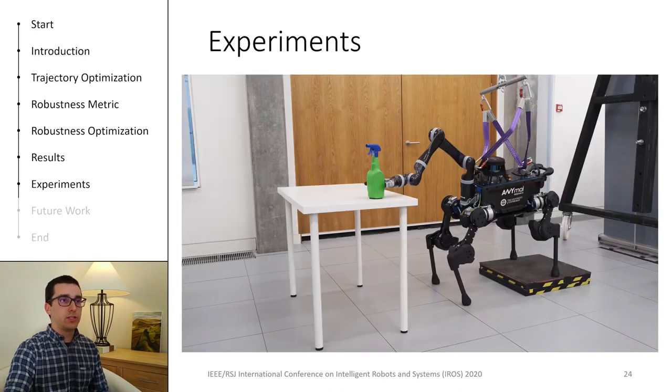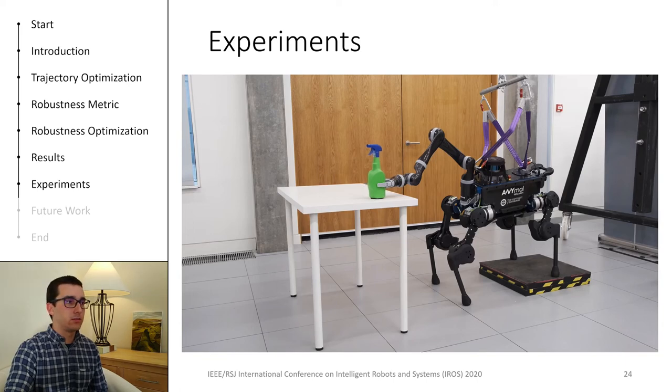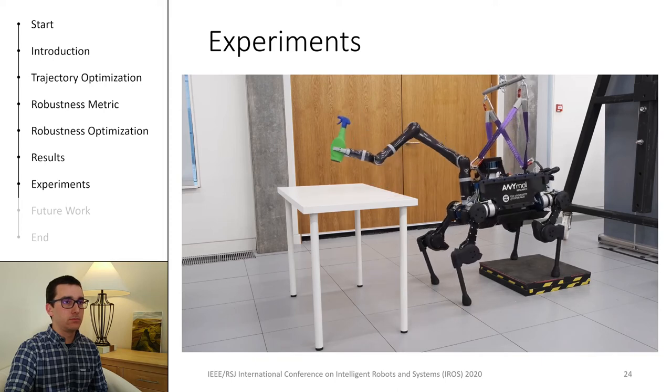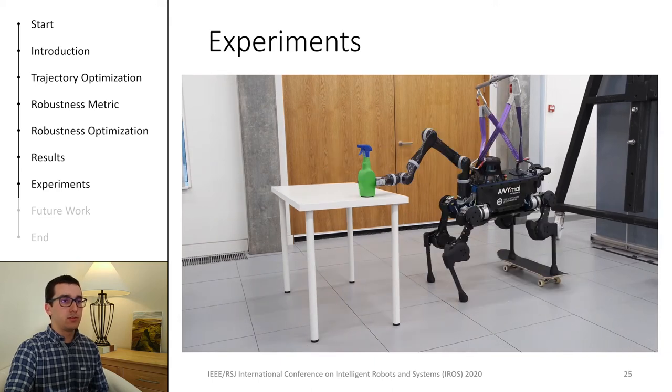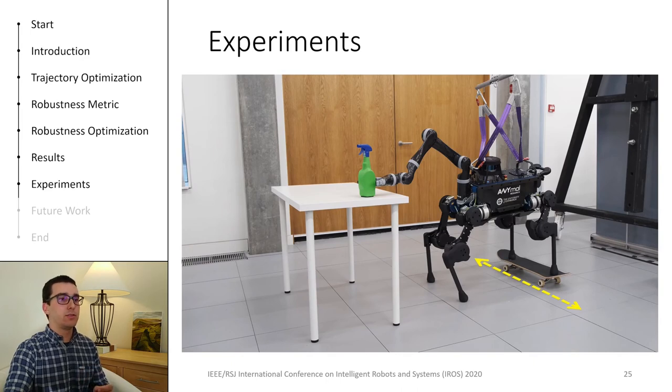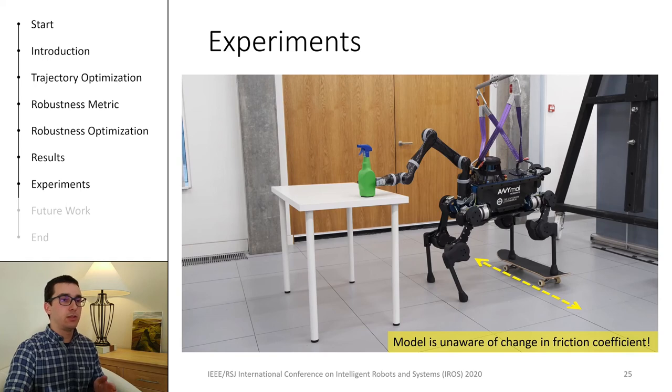To validate the whole-body trajectories computed with our framework, we tested them in full physics simulation. We also validated them through experiments on the real robot. In this video, the robot is on a scenario with flat surfaces at different heights. Then, we replace the slabs with a skateboard. The bearings on the skateboard significantly change the friction coefficient along the rolling direction. To test robustness against contact uncertainty, we purposefully did not update the friction coefficient on the contact model. But the robot is still able to complete the task reliably.